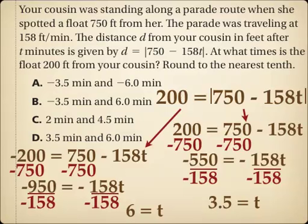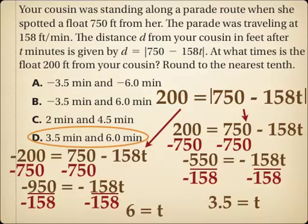This means the float is going to be 200 feet away from my cousin in three and a half minutes and in six minutes. It makes sense that there would be two answers, because the float could be 200 feet away before it passes her, and then 200 feet away again after it has passed her.